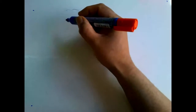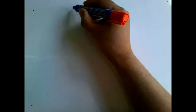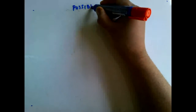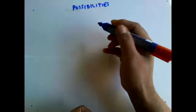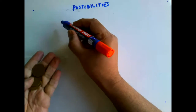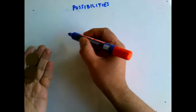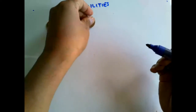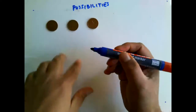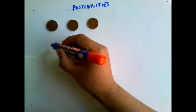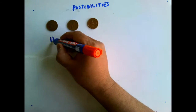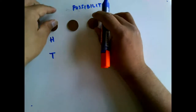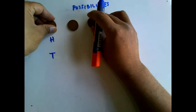Last time I gave you a homework of tossing three coins and looking at all the possible results. We have three coins to toss. On the first coin, if we throw it, the possibilities are only heads and tails.